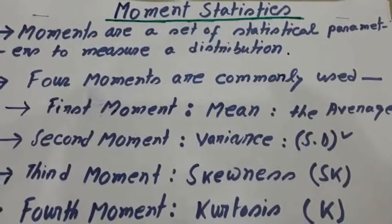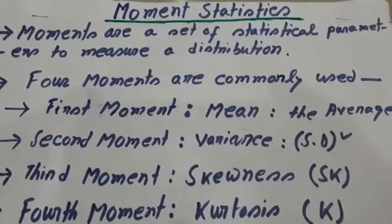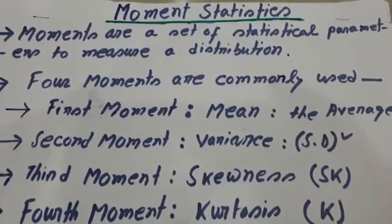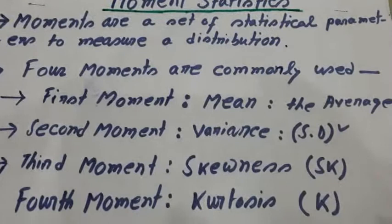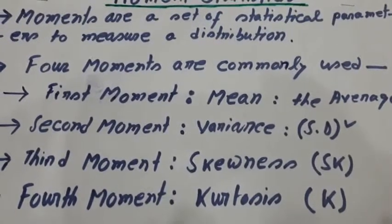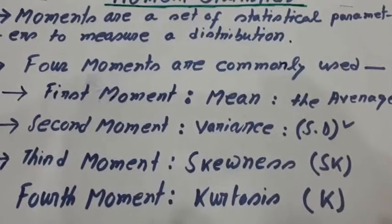Basically, moments are a set of statistical parameters to measure a distribution. There are mainly four moments used to measure a distribution.